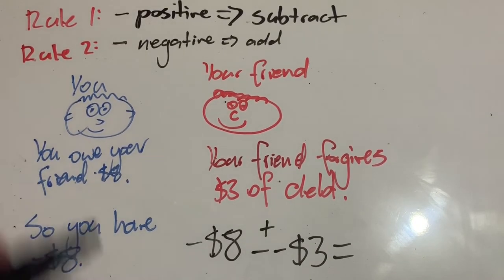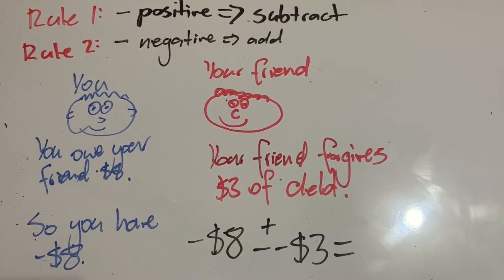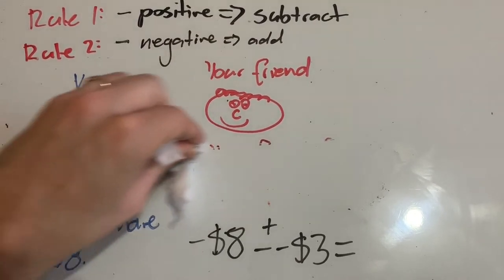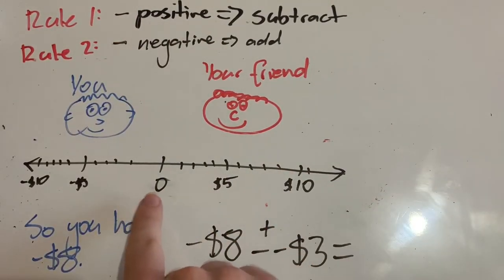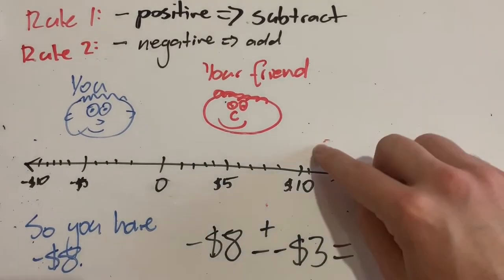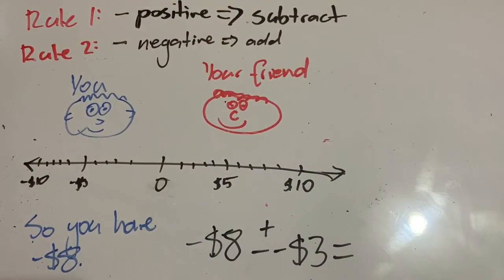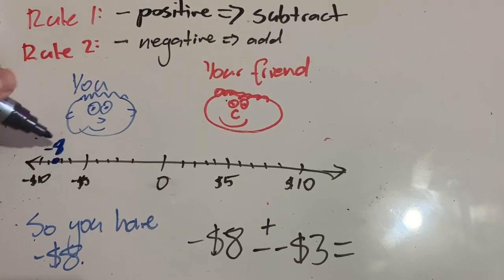It might be more helpful if we have a number line to help us visualize this process. So I'm going to remove our friends descriptions here. We already remember what happened there. So we've got our number line, zero's in the middle. To the left, we've got negative. To the right, we've got positive numbers. So let's work this out. So let's find negative 8 on our number line. So negative 8 is over here. Negative $8, of course.